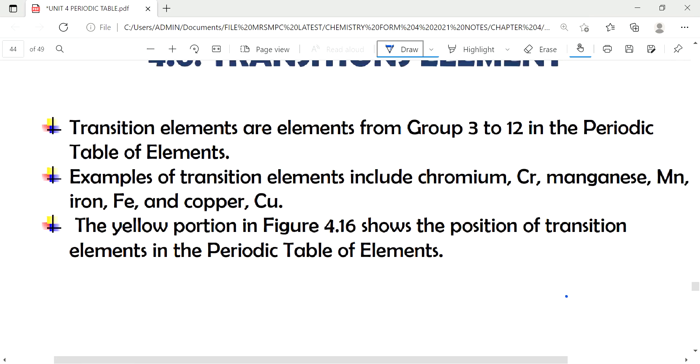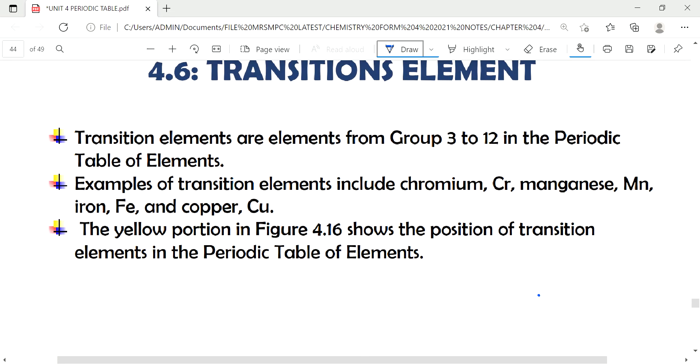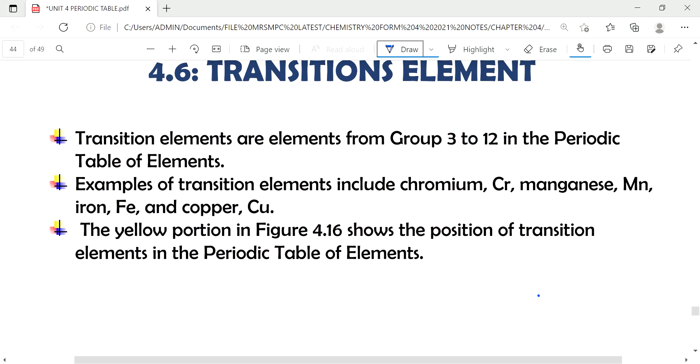Transitions elements are also known as transition metal. Why? Because all the elements in transitions elements are metals. So transition elements are from group 3 to group 12 in periodic tables.